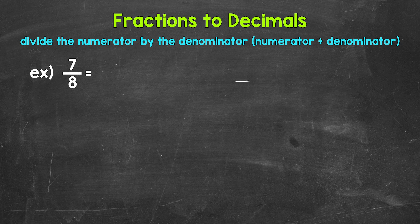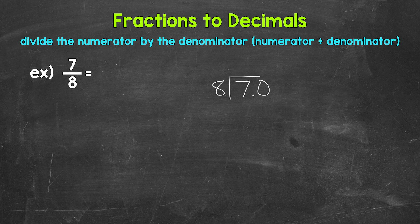So for 7 eighths, we can set this up as 7 divided by 8. Then we go through the division process. So how many whole groups of 8 in 7? We can't do that. So we need a decimal and a zero in order to work through this. Once we have the decimal and the zero, bring the decimal straight up into where the quotient, the answer will be.